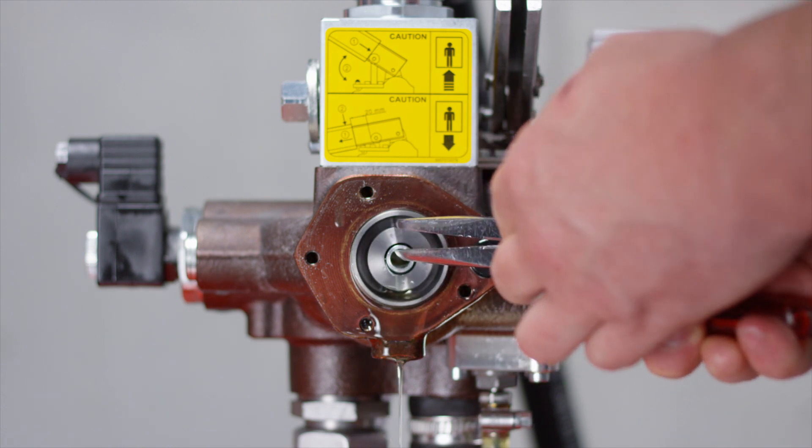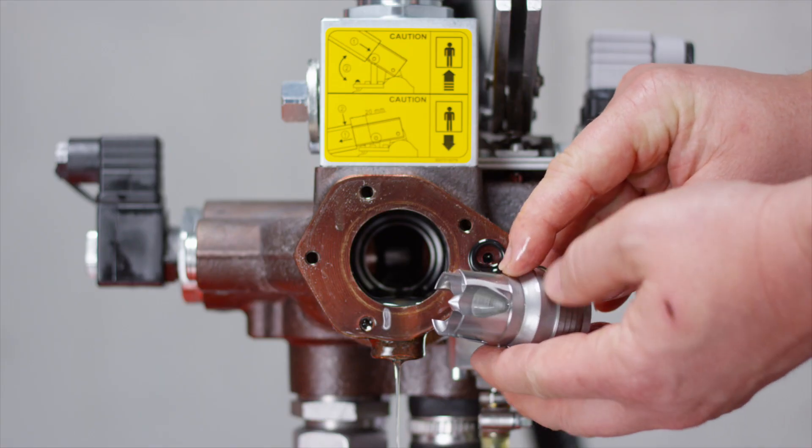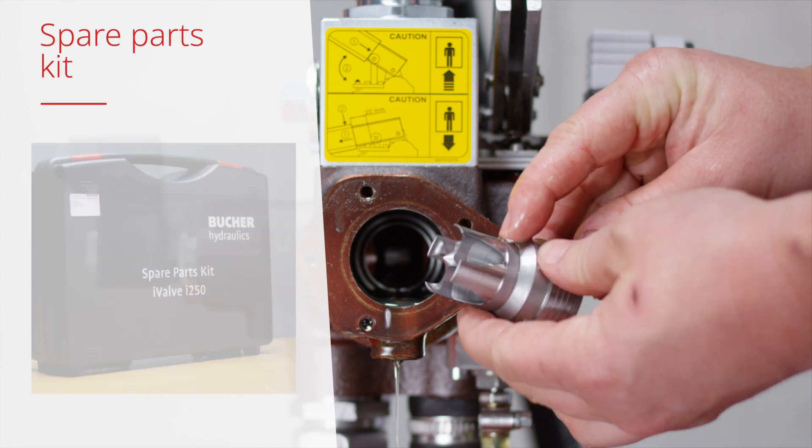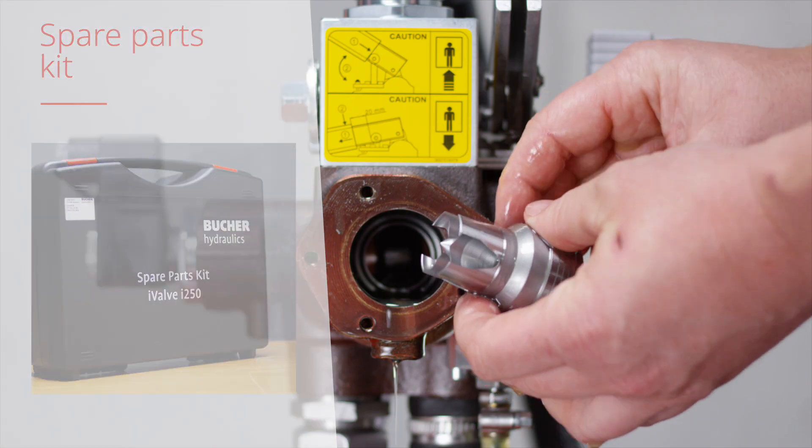Remove the RSVQ piston with needle nose pliers. Check the RSVQ piston for damage on the sealing edge. In case of damage, use a new RSVQ piston.